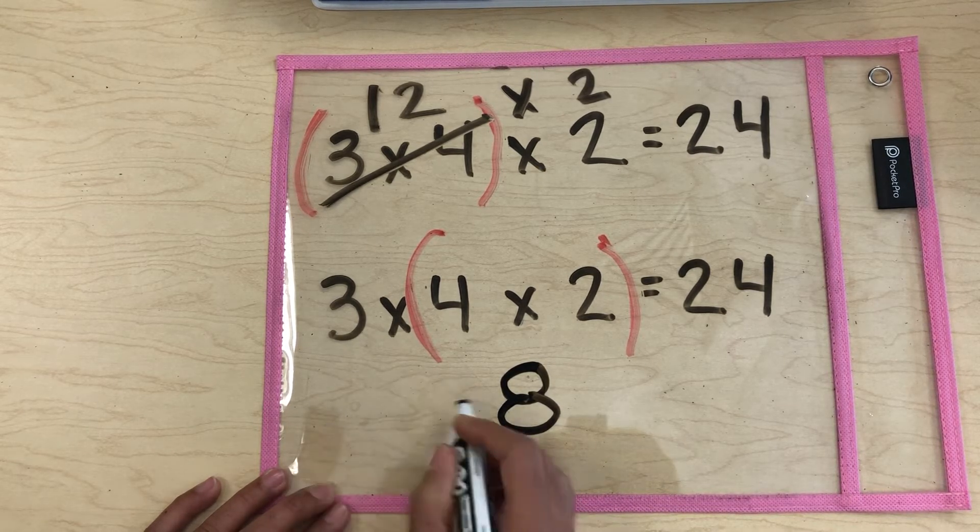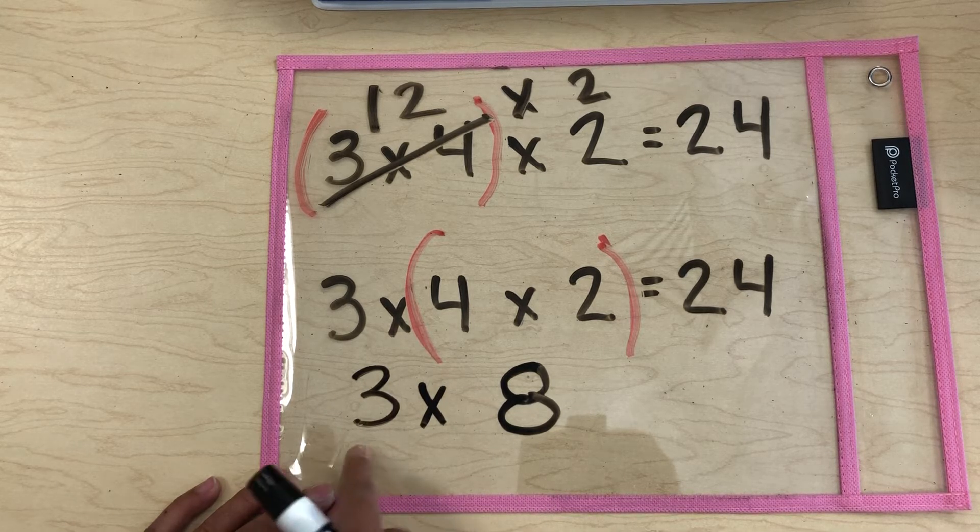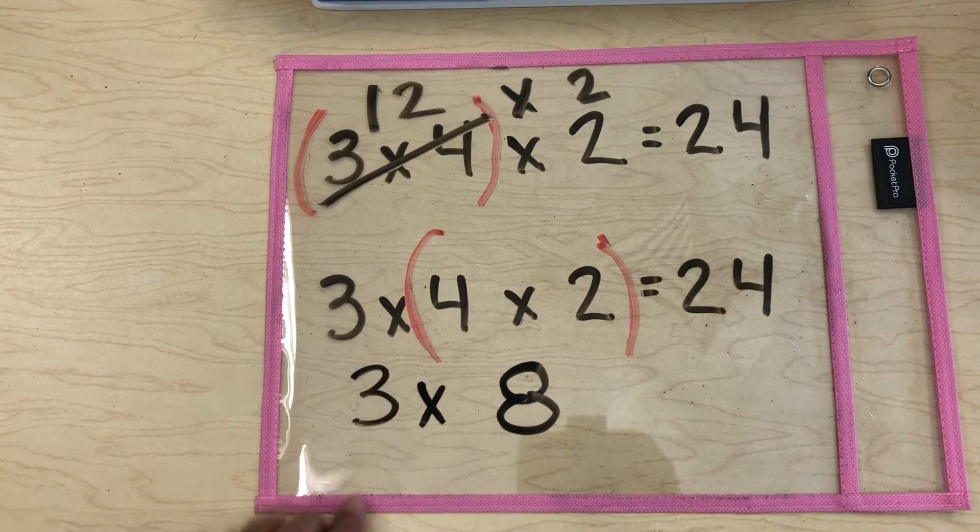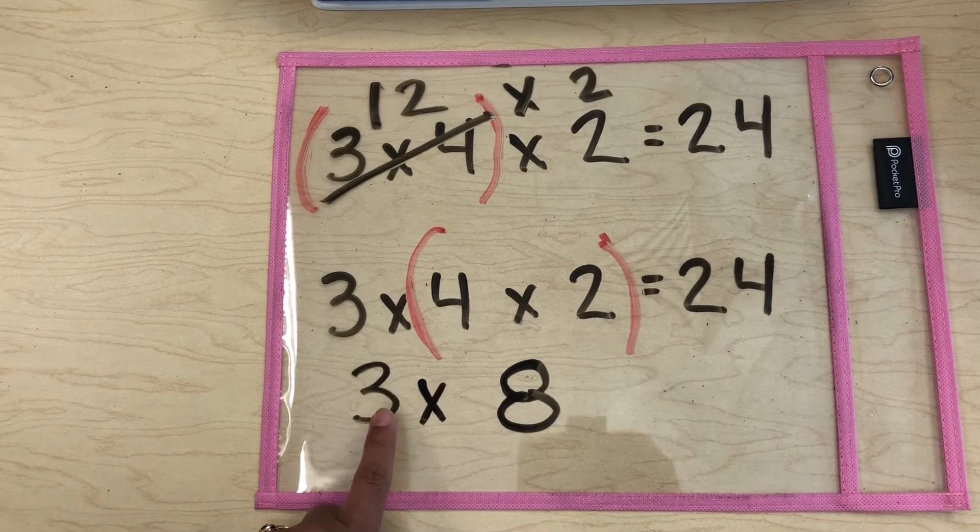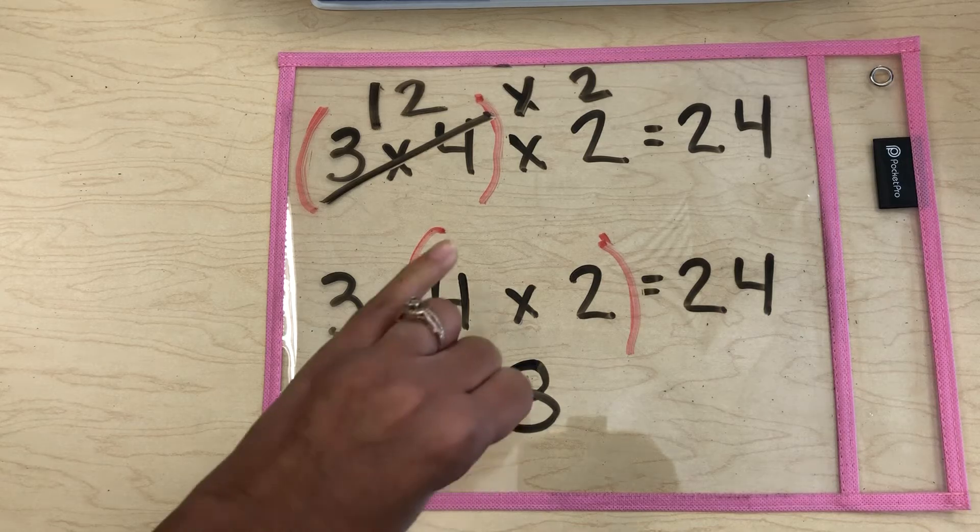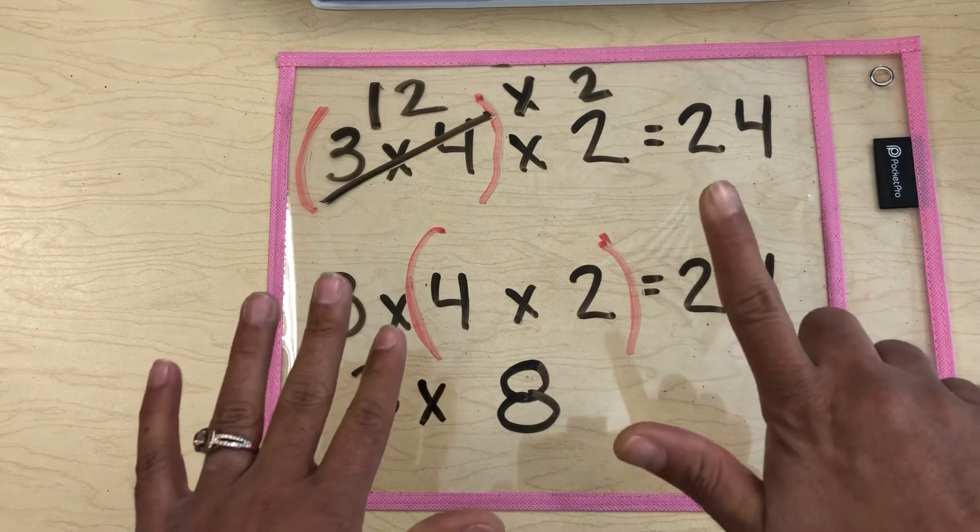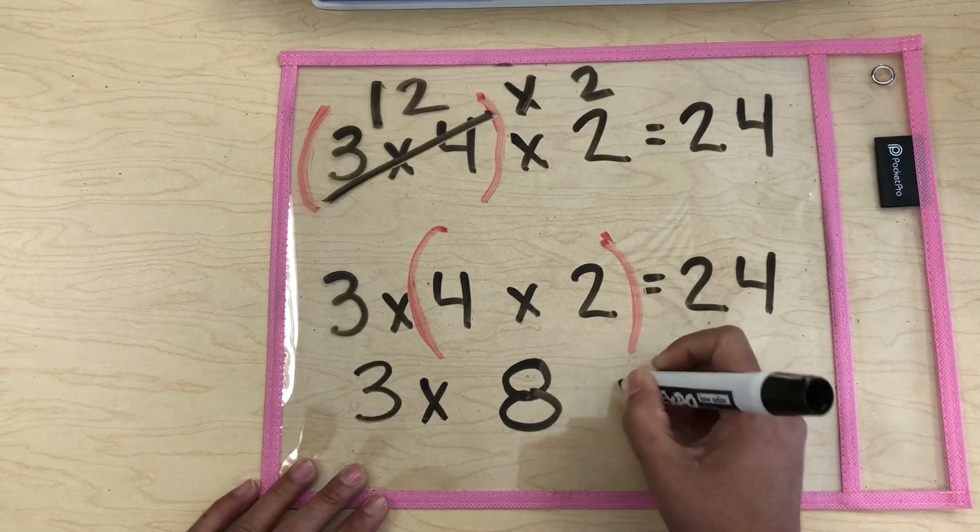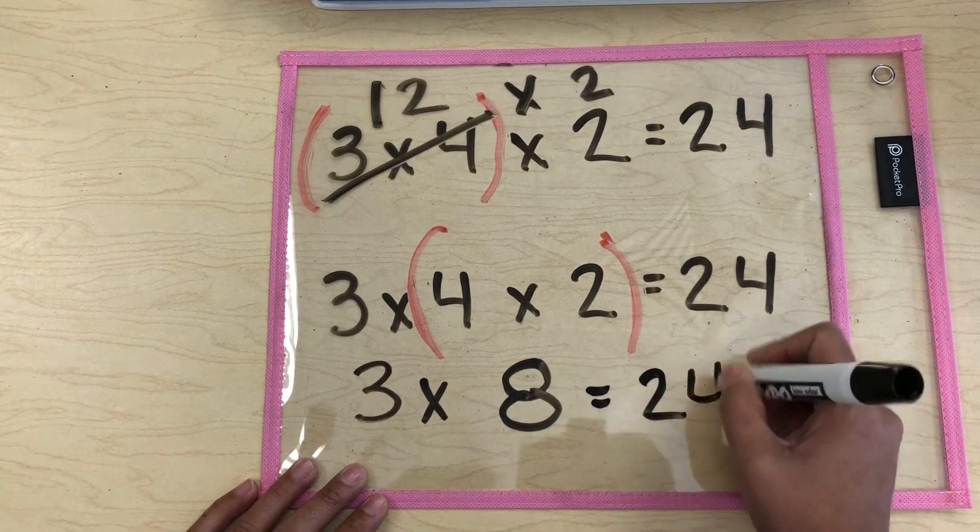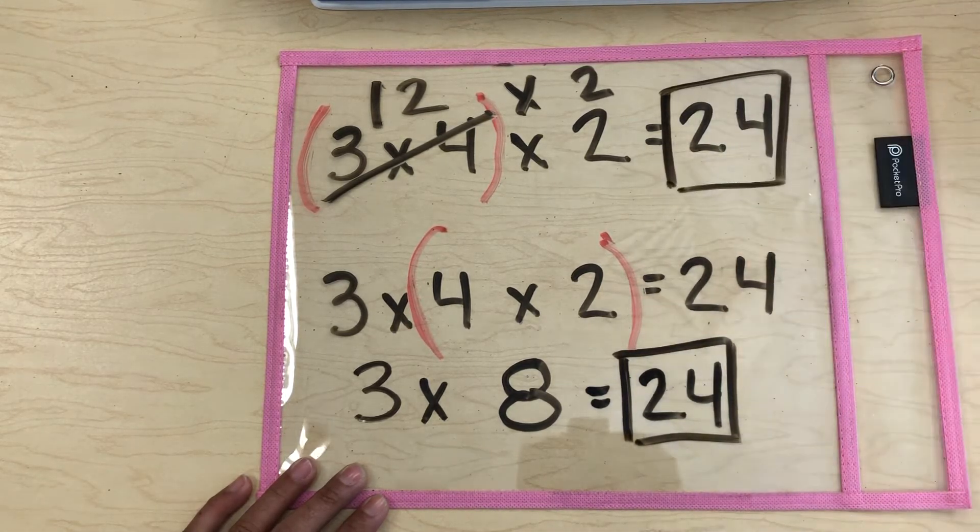Then we drop down the rest of the problem. Next, we figure out what 3 times 8 is. If you have viewed any of my other videos, you know the jingle to 3. So 3, 6, 9, 12, 15, 18, 21, 24. Very good. So this is also equal to 24. Both products stayed the same.